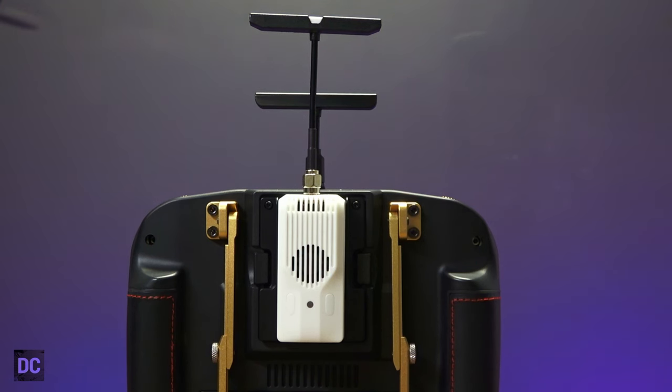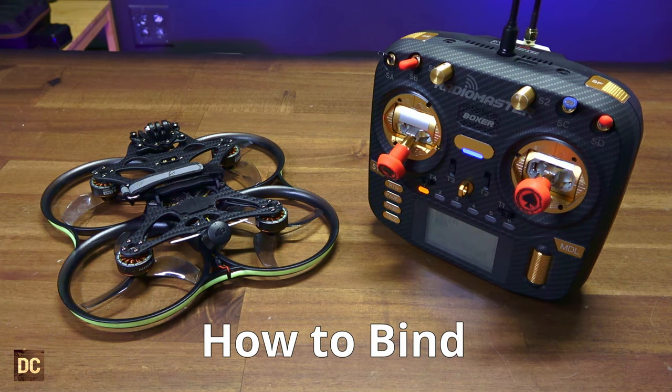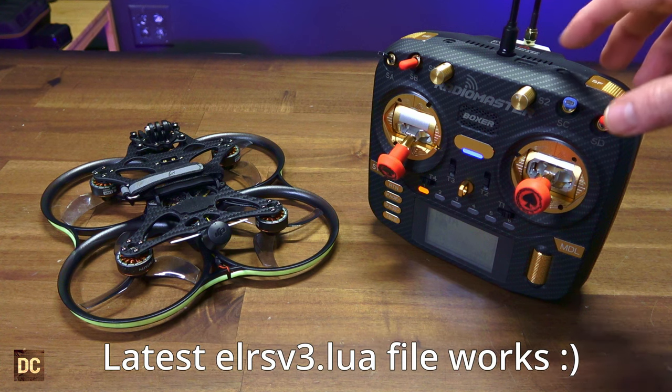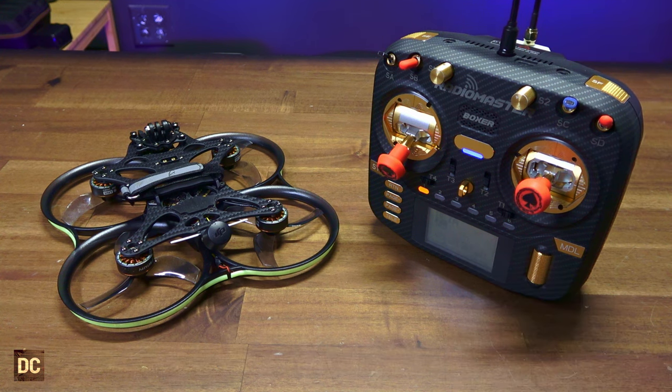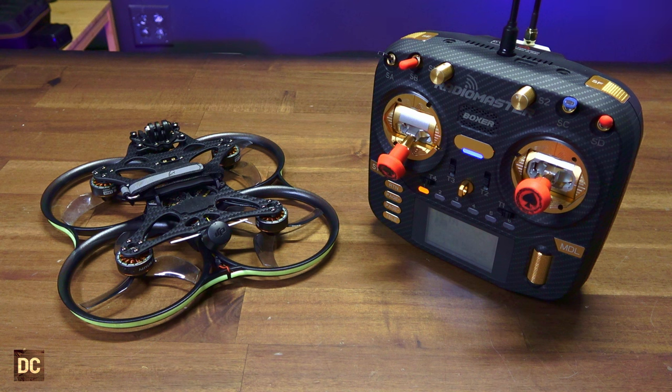BetaFPV is shipping the Nano TX V2 module with the current version of ELRS on board. It is currently 3.3, and it is updated and ready to work with 3.0 receivers. Currently on my Edge TX operating system on my Boxer, I do have the latest Lua script, and that is 3.0. It does work with the module, which is great because it loaded right up, and it identifies inside the system menu as the Nano TX V2, which is super cool. So if you don't see that, just make sure that your Lua script is updated.